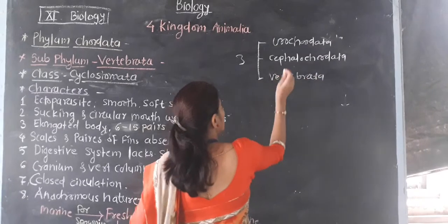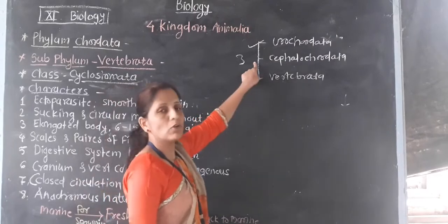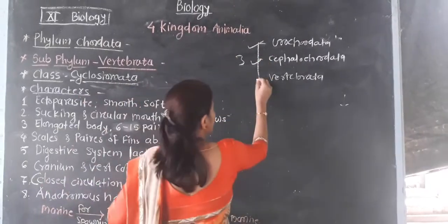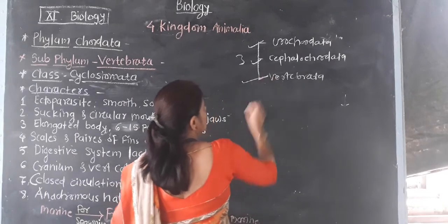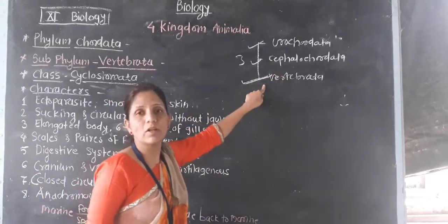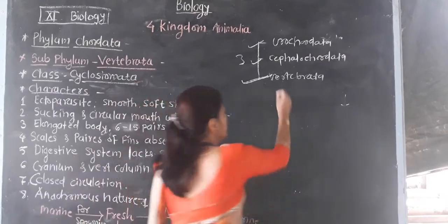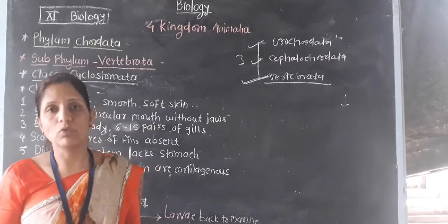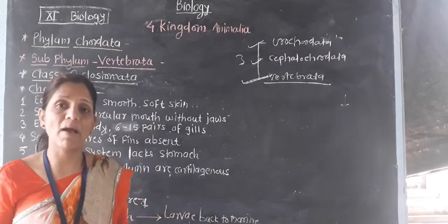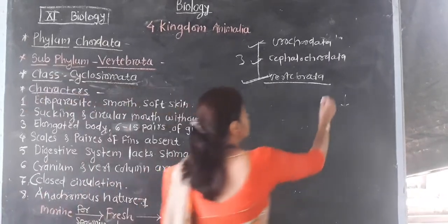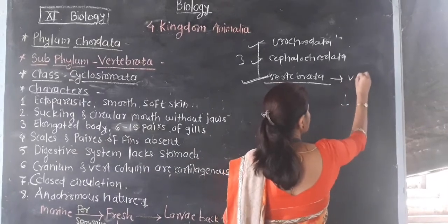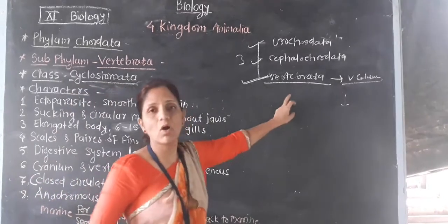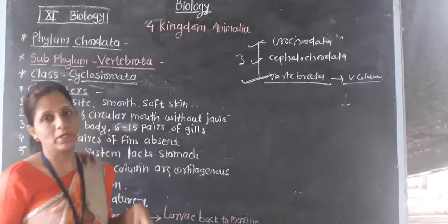We have also seen characters of Urochordata and Cephalochordata. Today we are discussing the third subphylum of phylum Chordata — Vertebrata. The important character of Vertebrata is that the cartilaginous notochord is replaced by the vertebral column.